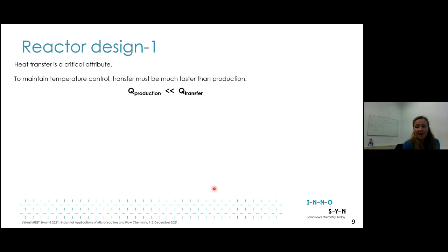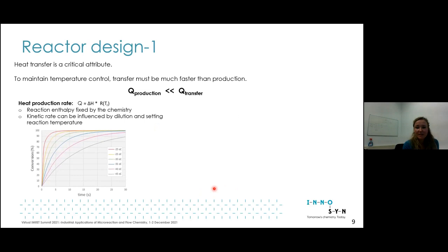In reactor design the most important attribute for exothermic reactions is heat removal. We have to take into account that heat transfer rate has to be higher than heat production rate. Heat production rate depends on the product of reaction enthalpy and reaction rate. Reaction enthalpy is determined in batch RC1 experiments.